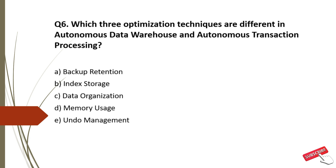Option A: Backup Retention — there is no difference in backup retention between ADW and ATP, so this is incorrect. Option B: Index Storage — ADW is for data summary whereas ATP is for indexes, so this is correct. Option C: Data Organization — ADW is columnar whereas ATP is row-wise, so this is correct. Option D: Memory Usage — ADW allows parallel joins and complex aggregation in memory, ATP uses memory for caching, so this is correct. Option E: Undo Management — incorrect. The correct options for Question 6 are B, C, and D.